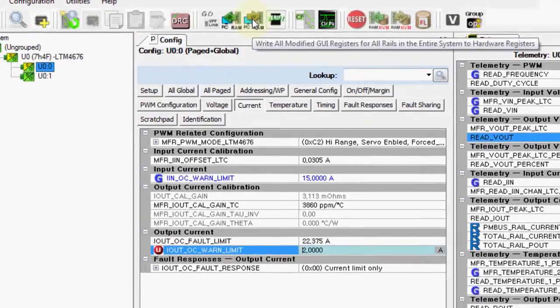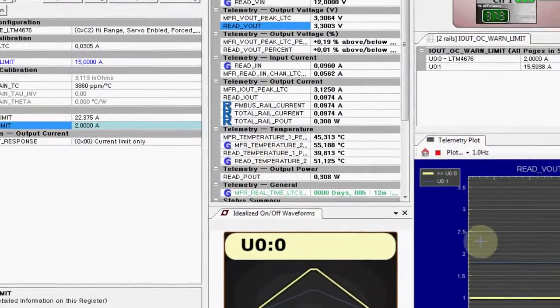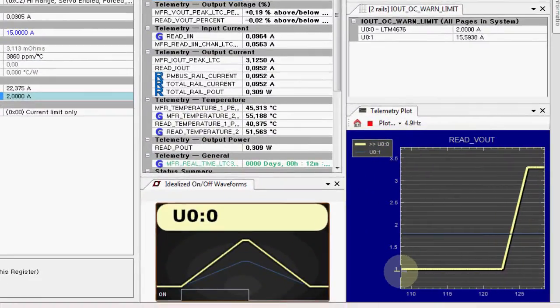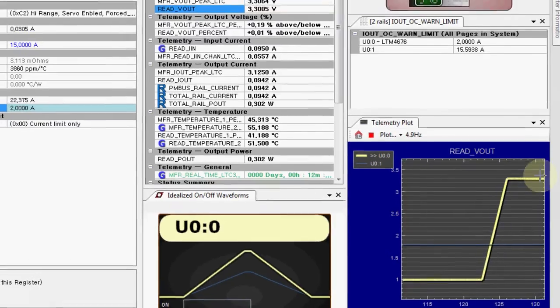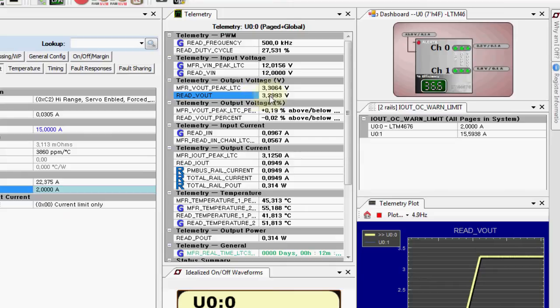So we can write that configuration to the device and we can see over here our output voltage change from 1 volt up to 3.3 volts. We can also see real-time right here our output voltage is reading 3.3 volts as well as our output current.